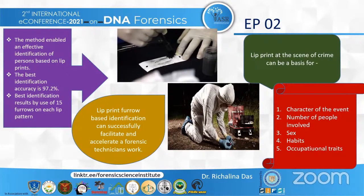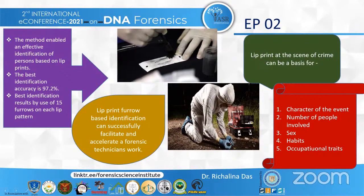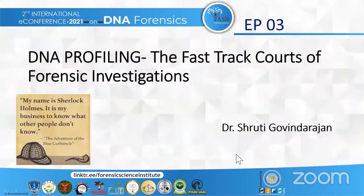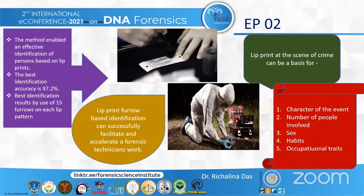Coming to the final conclusion: this method enabled effective identification of a person based on their lip prints. The best identification accuracy was obtained at approximately 97.2%, and the best identification results were seen using 15 furrows on each lip pattern — either the upper lip or the lower lip. Lip prints at the scene of crime can provide a basis for various objectives such as determining the character of the event, the sex involved, and the number of people involved. The lip print pattern helped and facilitated the forensic technician's work to a greater level. Thank you.